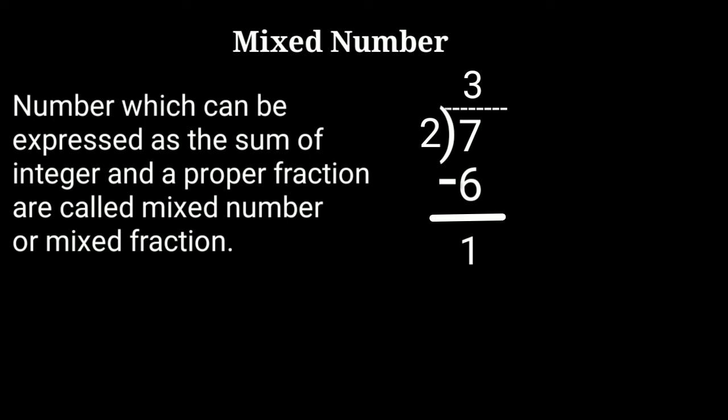According to this division, each one gets 3, but 1 is also remaining. So we should write this as 7 upon 2 is equal to 3 and 1 upon 2, which in Hindi we read as 7 divided by 2 equals 3 and 1 divided by 2.